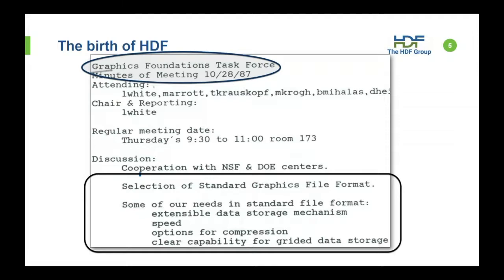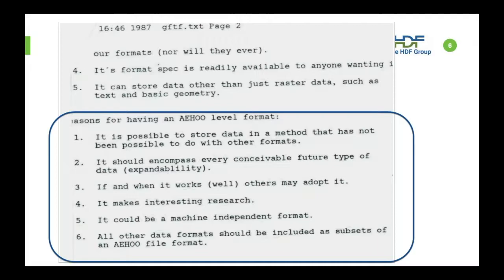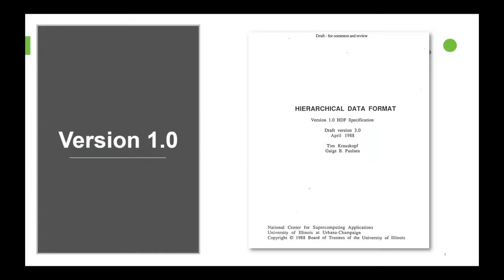This is an email describing a meeting in October of 1987, in which they were looking for some way of managing the data between all of these different systems — the big systems, the small systems, the desktops, the supercomputers. Some of the needs were that it had to be extendable, fast, have options like compression, and support gridded data storage. They initially called it the all-encompassing hierarchical object-oriented format, or IHOO. It should be possible to store data in a method not possible with other formats and accommodate every conceivable future type of data. And if it worked well, they hoped that other people would adopt it.